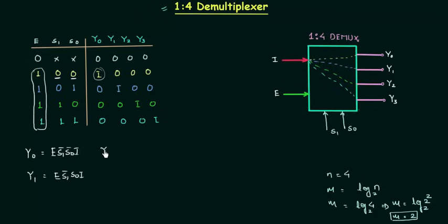y2 is e, s1, s0 complement i and y3 is equal to e, s1, s0 i. So these are the expressions and we can easily implement them by using four input and gate and we require 4 such gates. So let's implement the logic quickly.